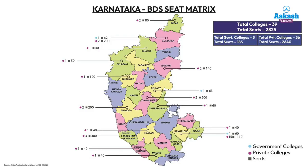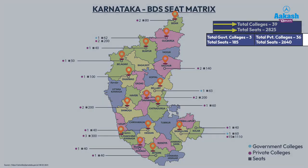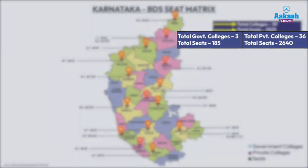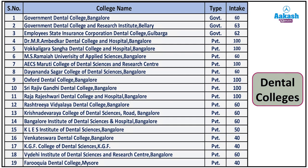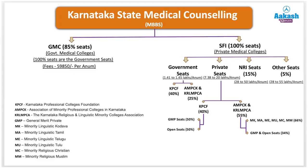Post MBBS, it is also important to understand the BDS seat matrix. A map shows government colleges, private colleges, and number of seats. The total number of colleges for BDS is 39, with total seats of 2,825. There are 3 government colleges and 36 private colleges, with 185 government seats and 2,640 private seats. The dental colleges — both government and private — are clearly visible on screen to help you identify colleges in your nearby area.